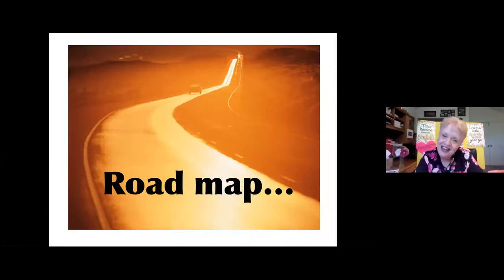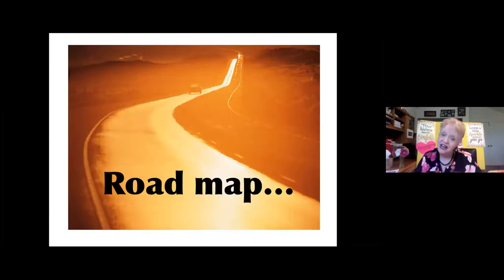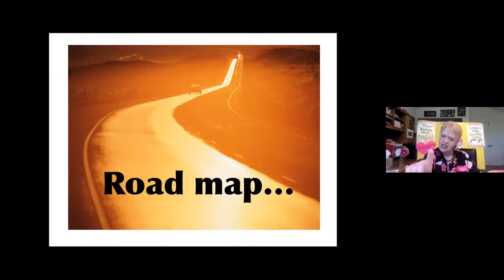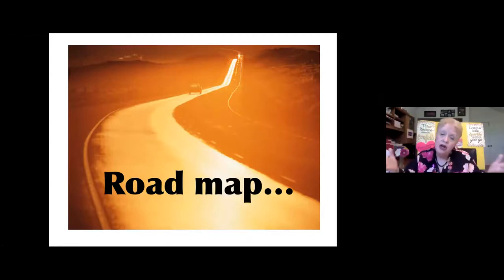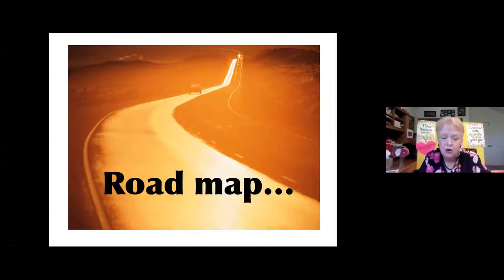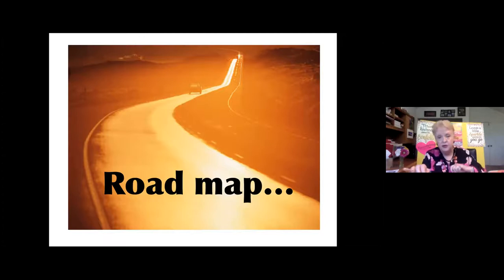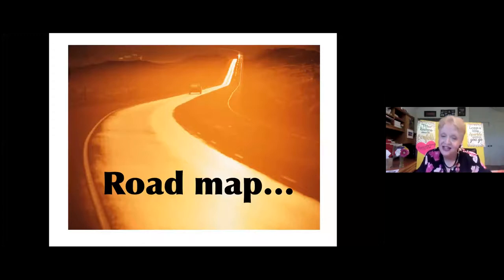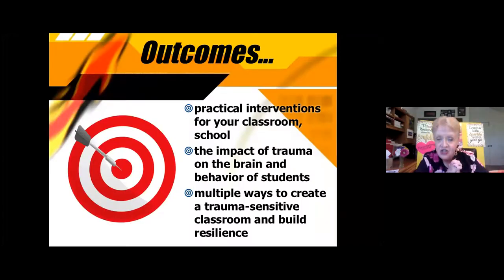Our roadmap today includes many different destinations. I use the analogy of a roadmap when I design training, as well as when I design lessons for my students, because we need to teach with the end in mind. Where do I want my students to go, and how am I going to navigate them to get there? In a classroom that embraces social-emotional learning, we may need to take some detours. I promise you no less than 27 strategies for your instructional toolkit in 60 minutes or less.